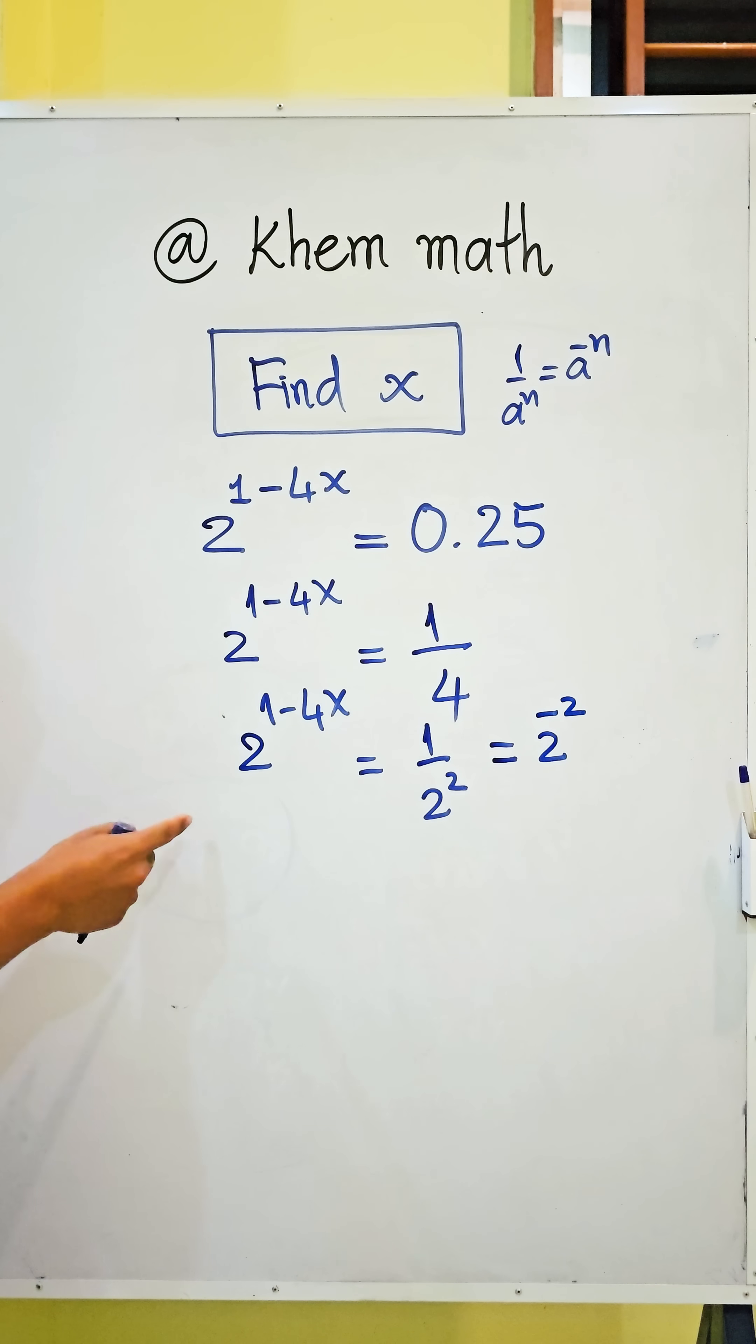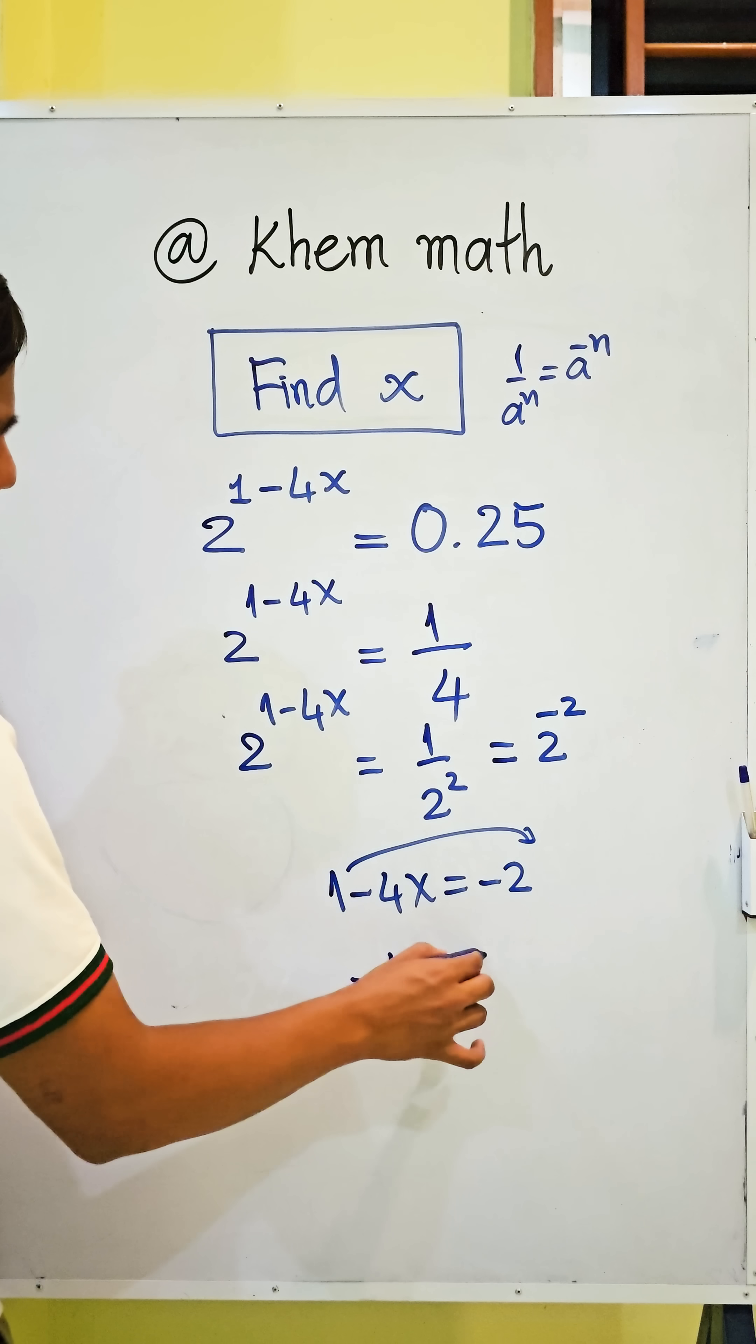Since our equation has the same base, we set the exponents equal. So 1 minus 4x equals negative 2. Moving 1 to the right-hand side, we get negative 4x equals negative 2 minus 1.